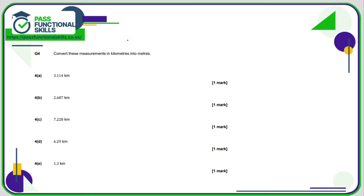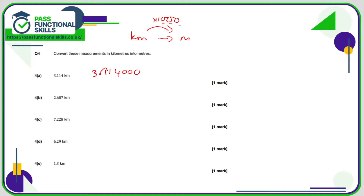Here we're going from kilometers into meters, so we are multiplying by 1000. For 3.114, multiplying by 1000 means the decimal point moves three positions to the right, making the number bigger. You can put some zeros on the right-hand side if that helps when moving the decimal point. One, two, three — that's 3114.000, otherwise known as three thousand one hundred and fourteen meters.